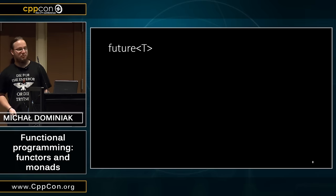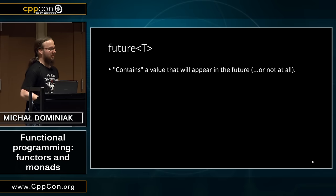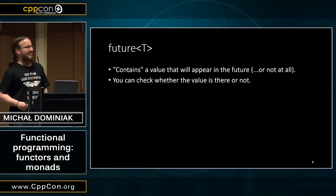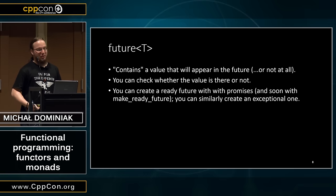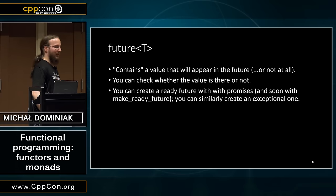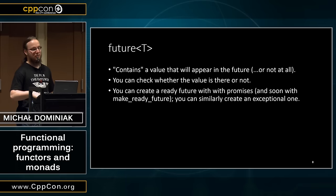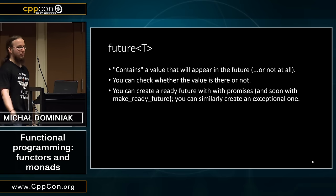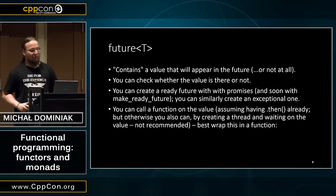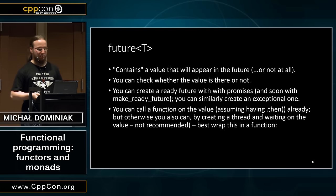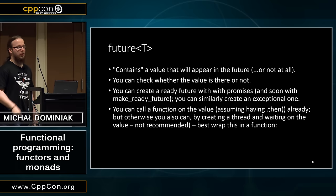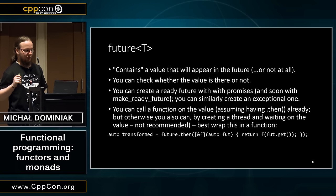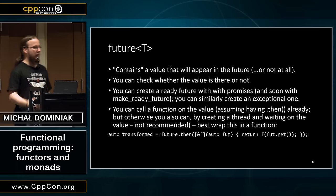There is this type called future<T>. It contains a value that may appear in the future, or is already there. You can check whether the value is there or not. You can create a ready future with make_ready_future, although creating one without that addition is kind of painful. And you can call a function on the value — with the proposed additions. If we just want to pass a value and call a function on it, we call then() and get the value from the future.